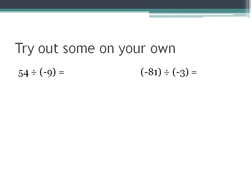Let's go ahead and give some a try. You can pause the recording and work these ones out. You can't let me know what you get because we're not in class, but you could write it down. Here's what I got: 54 divided by 9 is 6, and I have one negative number, so my final result is going to be negative 6. For negative 81 divided by negative 3: 81 divided by 3 is 27, I have two negative numbers — that's an even number — so negative divided by a negative gives me a positive 27.